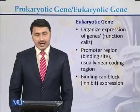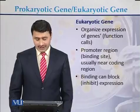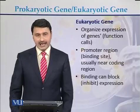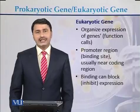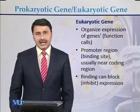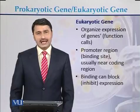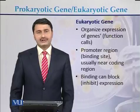Eukaryotic genes usually have organized expression. Promoter sequences are promoter regions that have binding sites near the coding region, and binding can block or inhibit expression. There are sequences near the binding site that sometimes enhance expression. Those molecules are called silencers and enhancers — if they enhance expression they are called enhancers, and if they stop expression they are called silencers.